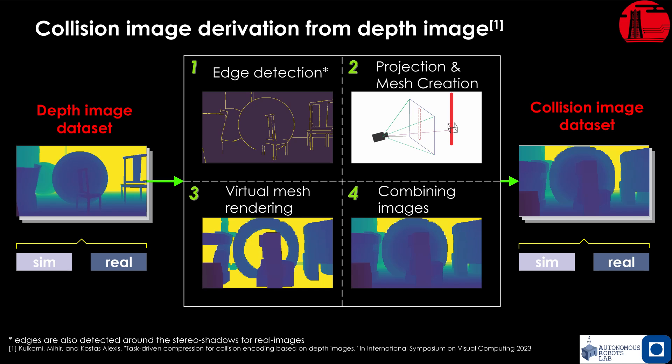This is achieved by first performing edge detection on the depth image, constructing a virtual robot-sized mesh around the edges, and then recasting through this virtual environment to obtain a collision image that captures spatial information about potential collisions.